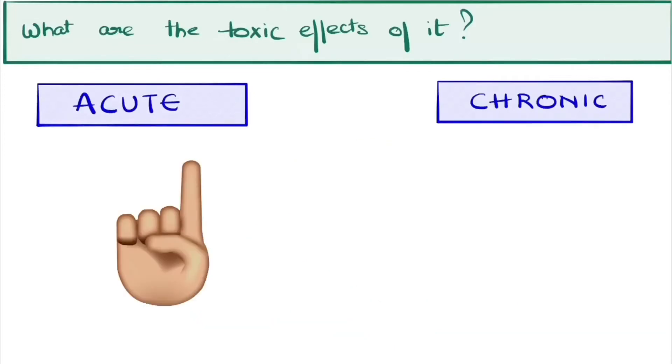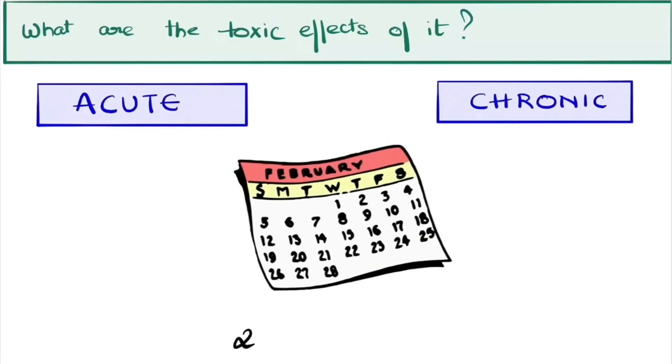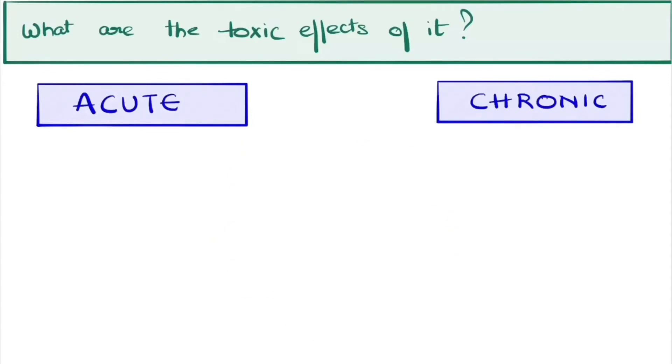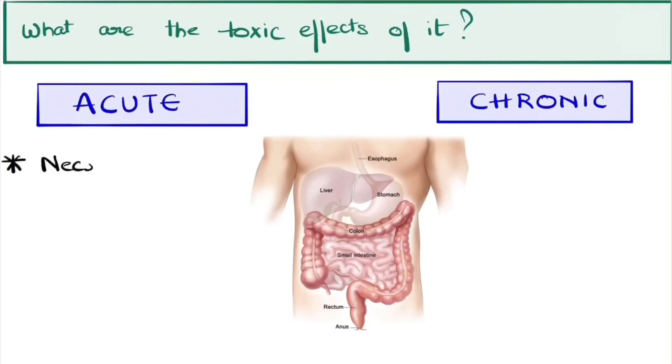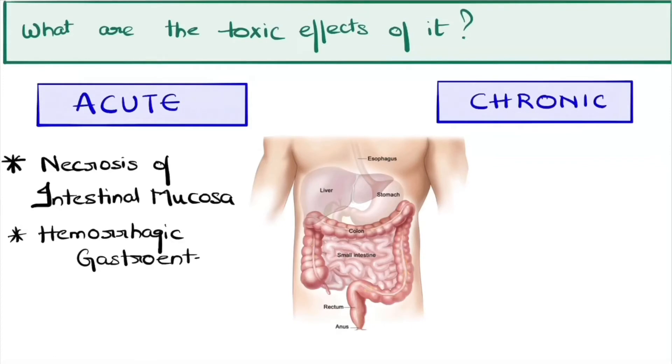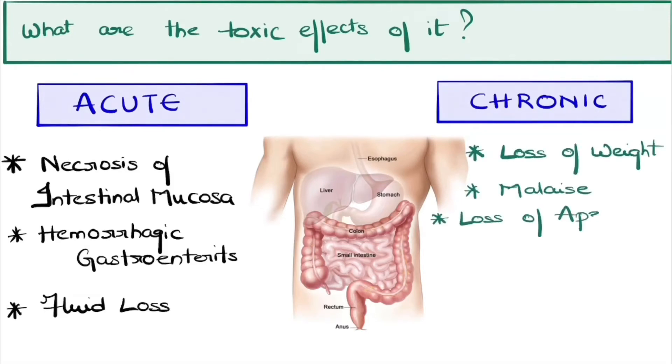Acute is sudden exposure of arsenic at once, and chronic over a period of time, that is 2 to 8 weeks. First in the GI tract, in acute cases, causes necrosis of intestinal mucosa, hemorrhagic gastroenteritis, and loss of body fluid. In chronic cases, it causes loss of weight, malaise, loss of appetite, colicky pain, constipation or diarrhea with vomiting. So these are the effects on the GI system.